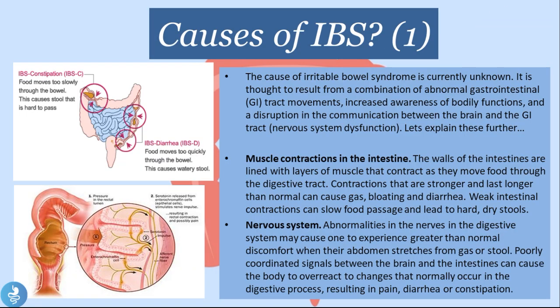Now let's talk about the causes of IBS. The cause of irritable bowel syndrome is currently unknown. It is thought to result from a combination of abnormal gastrointestinal tract movements, increased awareness of bodily functions, and a disruption in the communication between the brain and the GI tract — meaning a nervous system dysfunction.